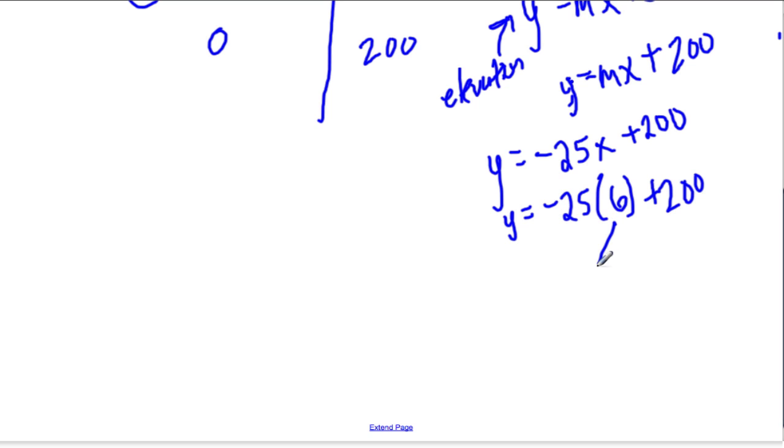So negative 25 times 6 is minus 150 plus 200. Well, a negative 150 addition here. Well, the 200 is positive, has a greater absolute value. And it's 50 further away from 0 than negative 150. So the answer is positive 50.